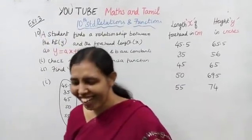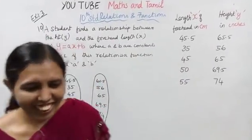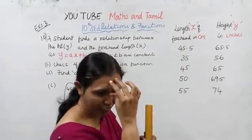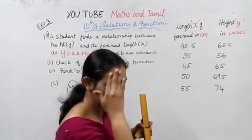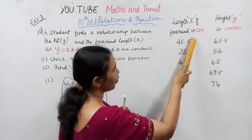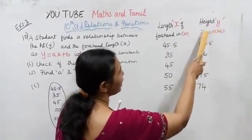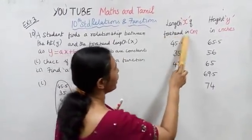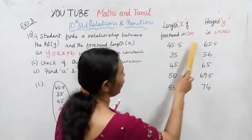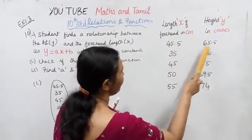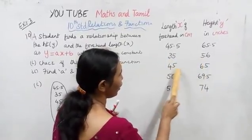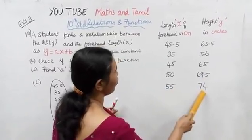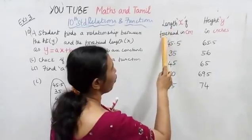There is one interesting problem. One woman's forehead length — how many centimeters? The forehead in centimeters is 45.5 and the height is 65.5. Then 35 is 56, 45 is 65, and 69.5, 55 is 74. The forehead — how many centimeters?